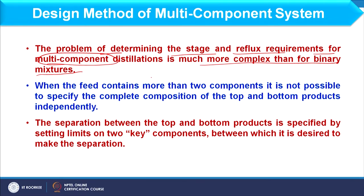To handle this problem, the separation between top and bottom products is specified by setting limits on two key components between which it is desired to make the separation. Among these components, we choose any two between which we desire to have complete or at least significant separation. We consider these as the key components, and separation is considered between these key components only. However, there are also methods where without selecting key components we can calculate the number of stages and reflux requirement for the multi-component system.